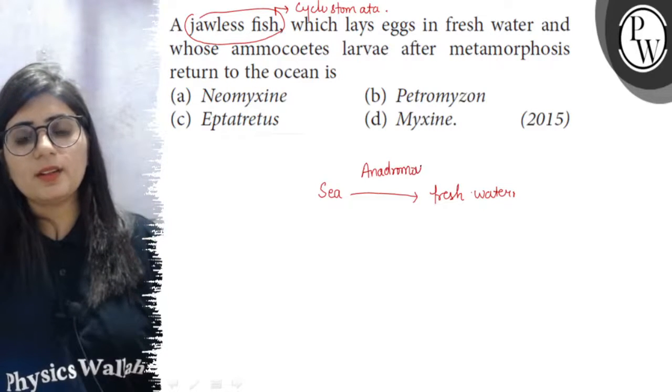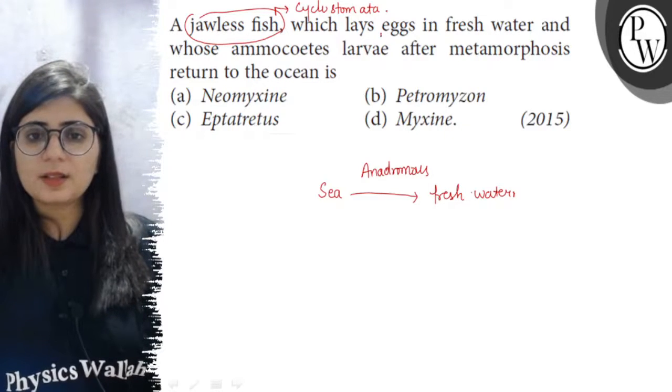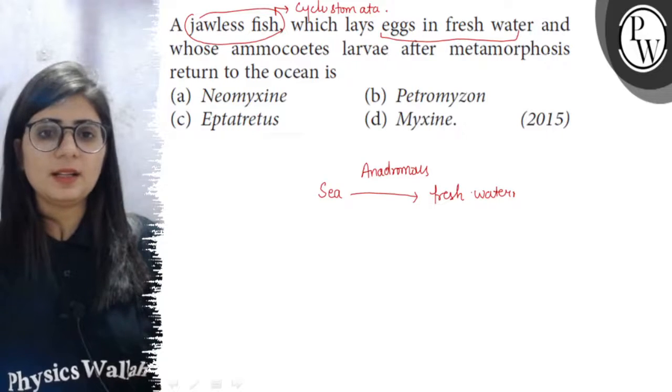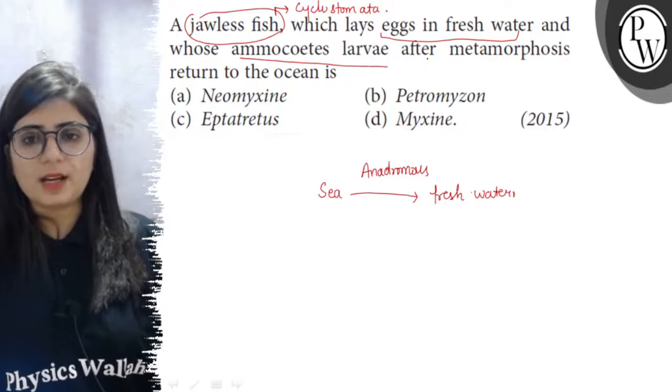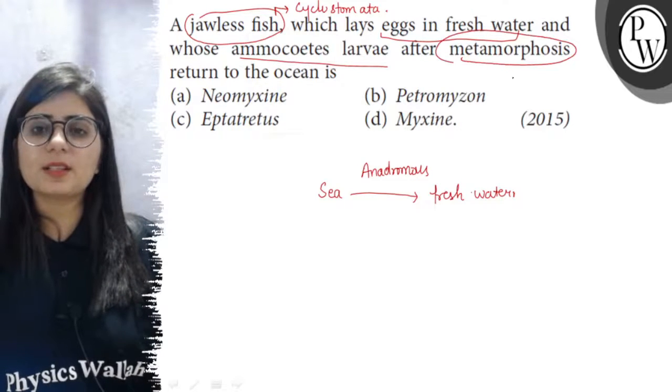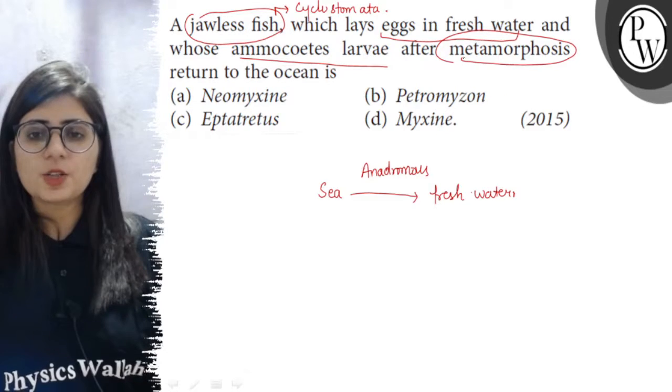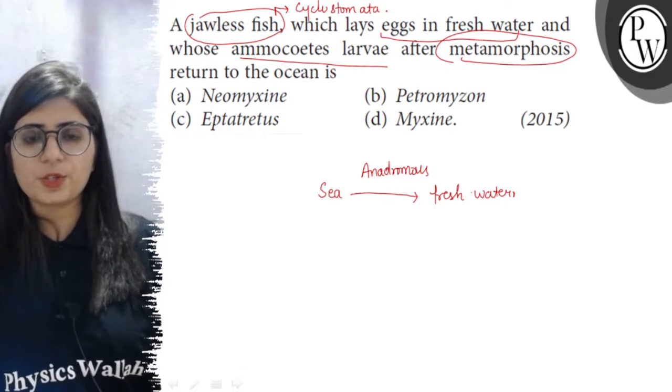Here the condition is given that the fish is living in ocean but it comes to fresh water to lay its egg, and its larva is known as the Amocitis larva. And after converting into adult—metamorphosis means conversion of larva into adult—after converting into the adult, it returns back to the ocean.